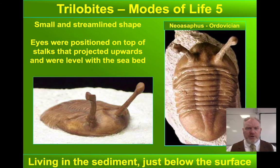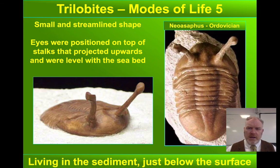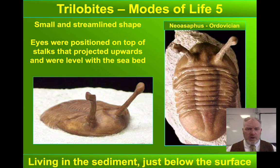This is a really unusual one — Neoasifus. If you look at the eyes here, growing out on these long stalks, there's clearly got to be some advantage to that. The interpretation is that this animal could crawl around just under the surface of the seabed with its eyes poking out at the top, watching out for potential danger. If you look at the shape of the body, it's quite disc-shaped, flat and relatively smooth, which again perhaps suggests it pushed itself through the mud.